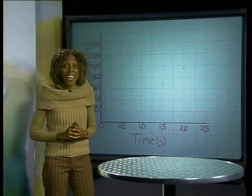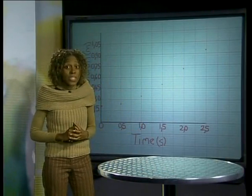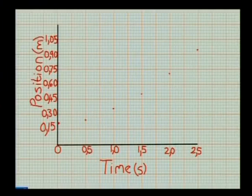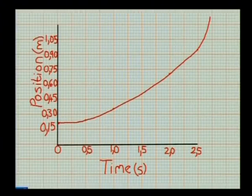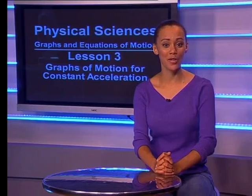Look, this line swoops upwards with an ever-increasing slope. The gradient is small at the start, but increases with time. Note that this displacement versus time graph is not a straight line. Since it is not a straight line, the velocity cannot be constant.